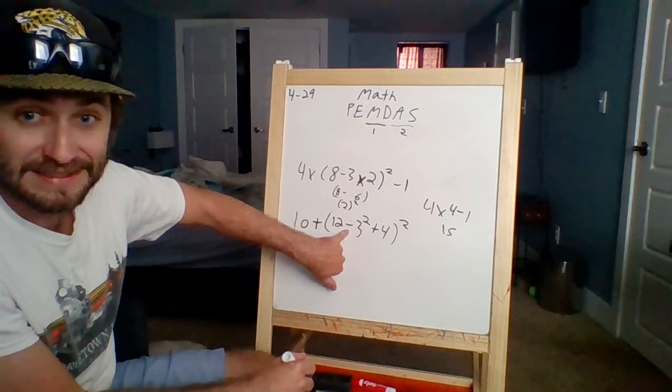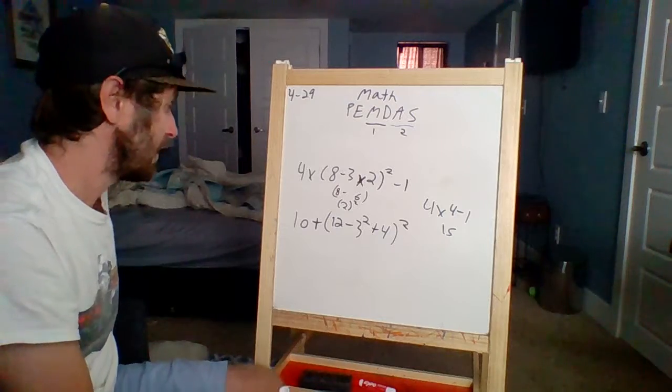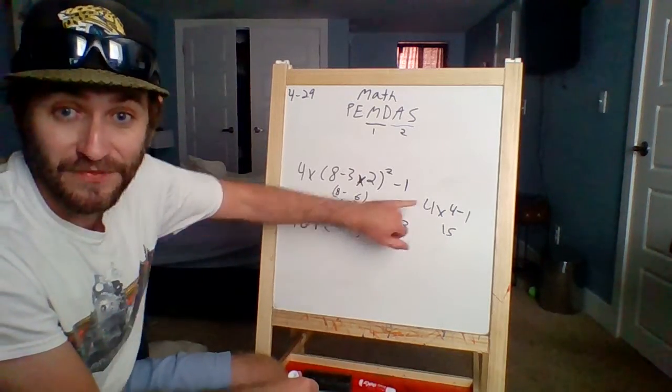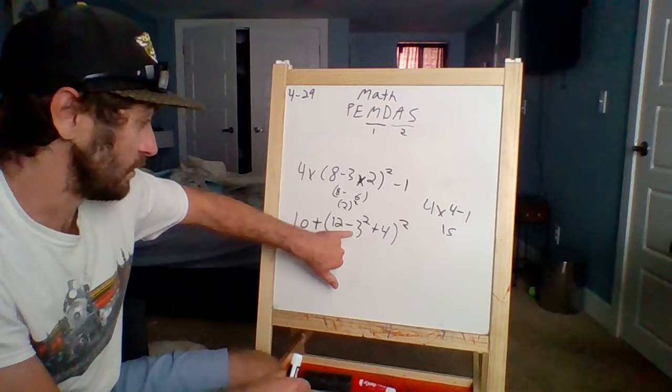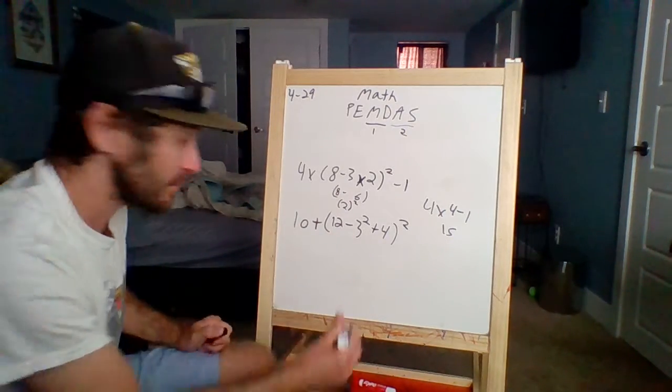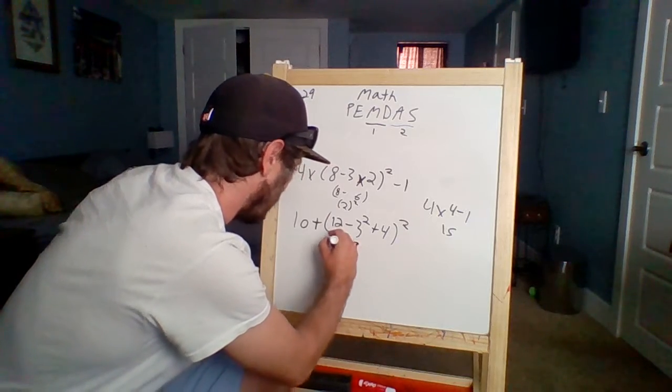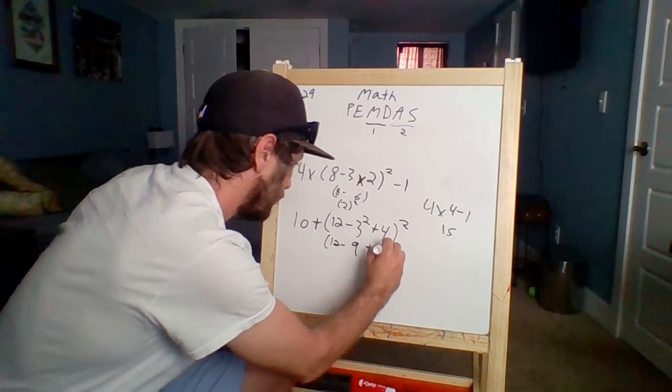Again, I see minus, I see an exponent, and I see addition, and then I also see an exponent for the whole parentheses. So let's do that exponent first. What is three squared? Three times three is nine. So 12 minus nine plus four squared.